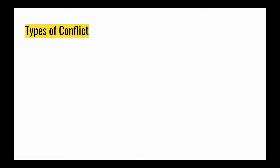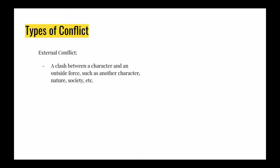There are two major types of conflict. One is called external conflict, which means the thing holding the character back is outside of themselves. This might mean they're fighting with another character, maybe society is keeping them from their goal, or maybe there's a giant storm trying to kill them — something outside the character keeping them from what they want.